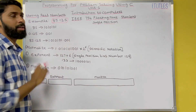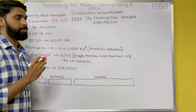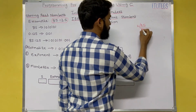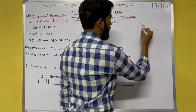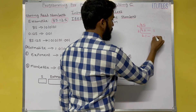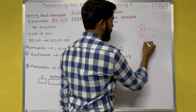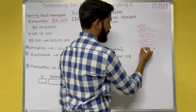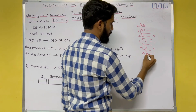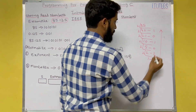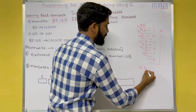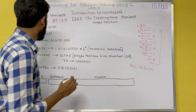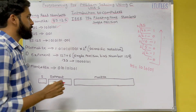The first step is to find the equivalent binary number for 85.125. For the integer part 85, we perform repeated division by 2. The remainders give us 1010101, so 85 equals 1010101 in binary.